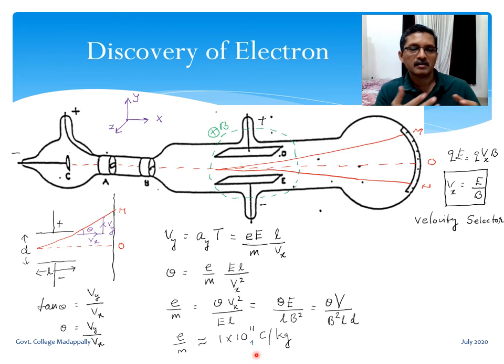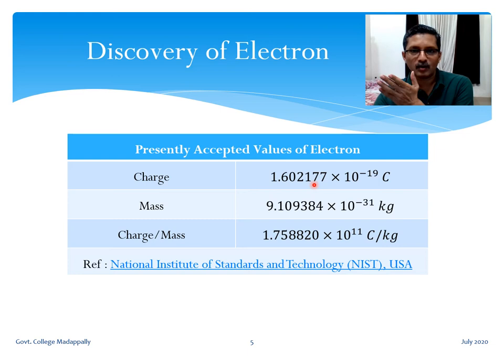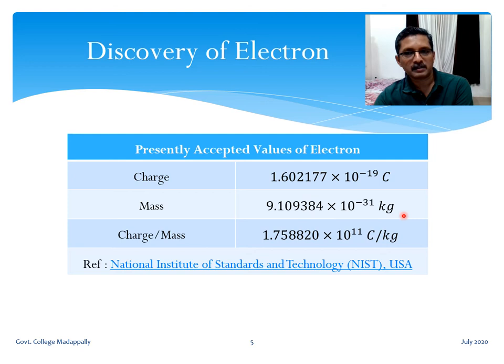In 1906, the Nobel Prize in Physics was awarded to J.J. Thomson for his discovery of the electron. The currently accepted values are: electric charge 1.602177 × 10⁻¹⁹ coulombs, mass 9.109384 × 10⁻³¹ kg, and charge-to-mass ratio 1.758820 × 10¹¹ coulombs per kilogram. These reference values come from NIST (National Institute of Standards and Technology), USA.